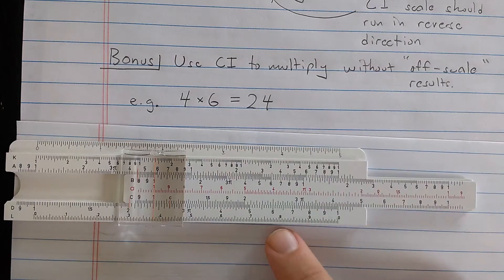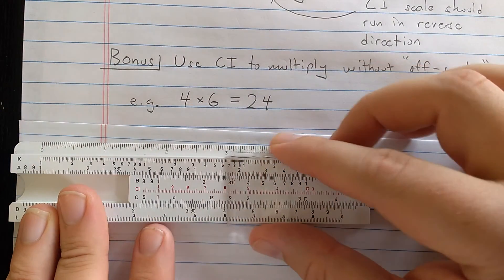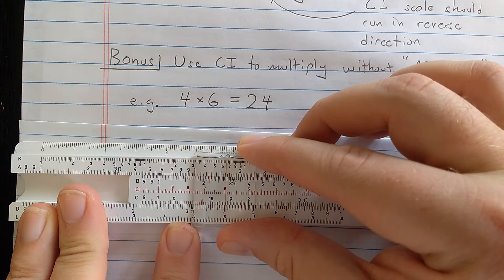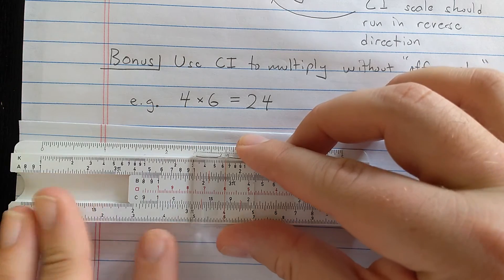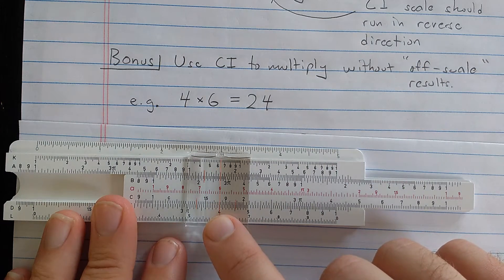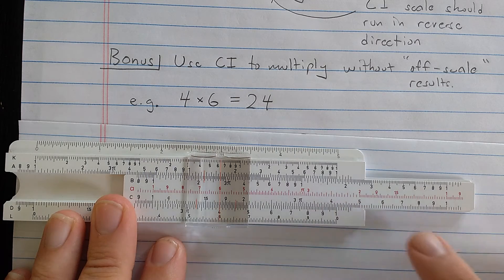Now the reason this works is because dividing by the reciprocal is the same as multiplying. Another way to think of it is, if you come back to the 4, what I want to do, multiplying is to go from 4 to 6.